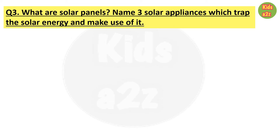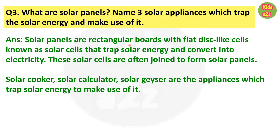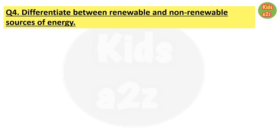Question number 3: What are solar panels? Name 3 solar appliances which trap the solar energy and make use of it. Answer: Solar panels are rectangular boards with flat disc-like cells known as solar cells that trap solar energy and convert it into electricity. These solar cells are often joined to form solar panels. Solar cooker, solar calculator, and solar geyser are appliances which trap solar energy.